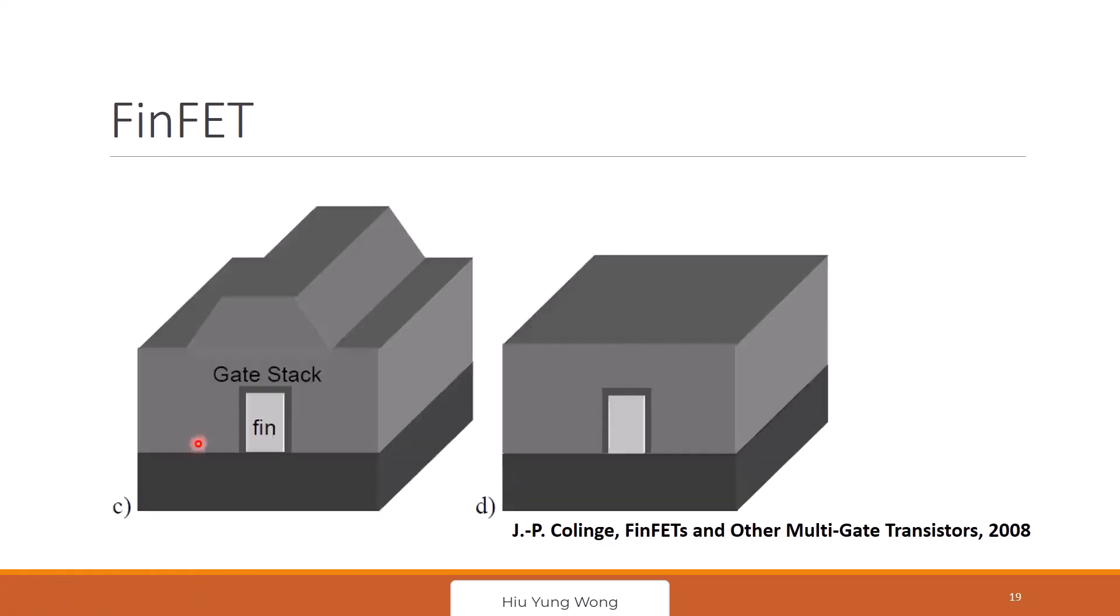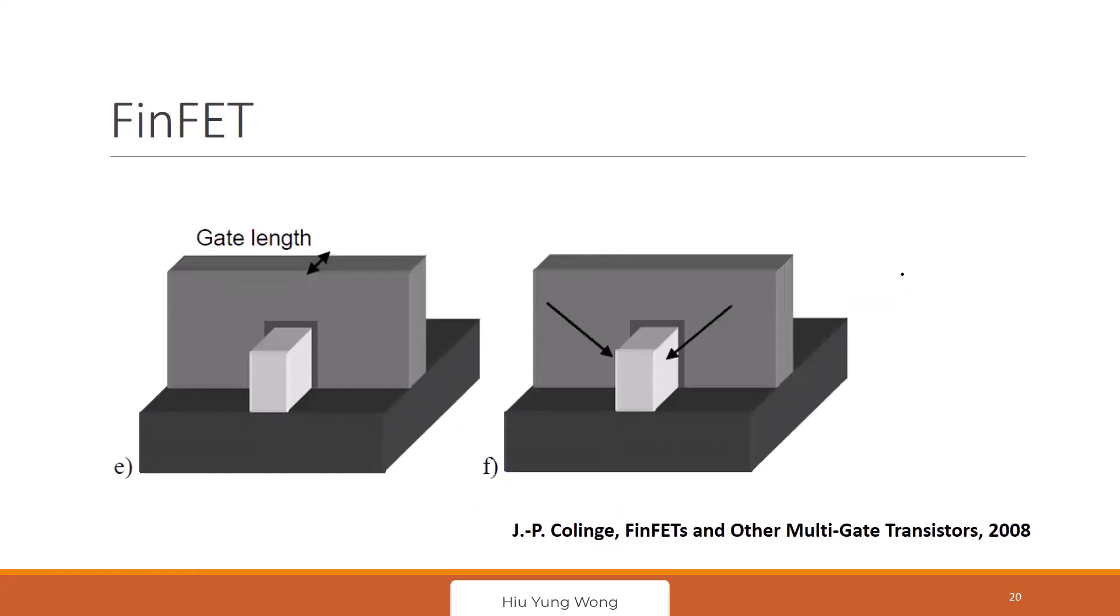Then what do we do? We deposit maybe polysilicon. Then we do CMP. That I just told you, CMP is used very often in nowadays process. Chemical mechanical polishing. It makes it very even. And then you do lithography to pattern the gate. So this is the gate. The gate is surrounding it.